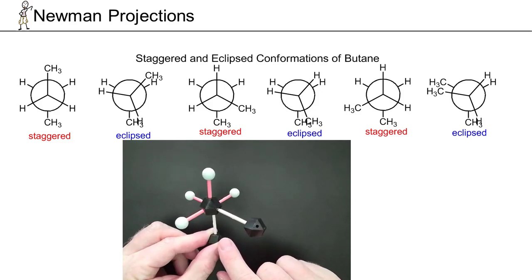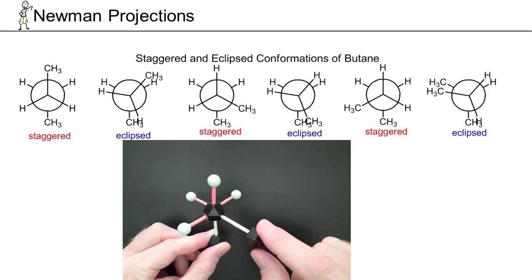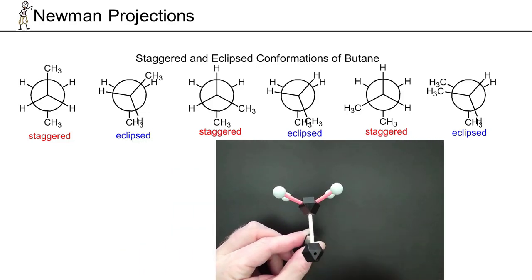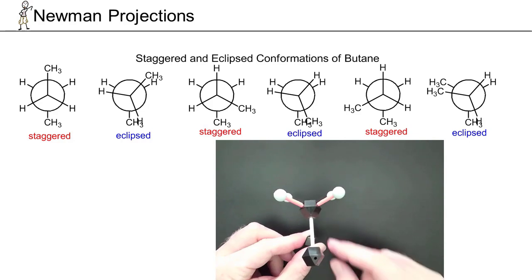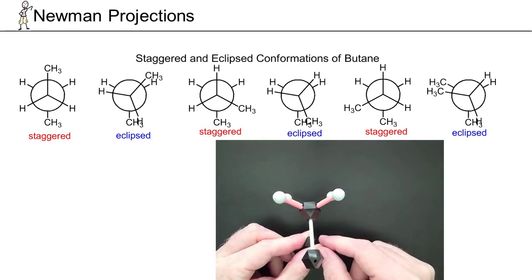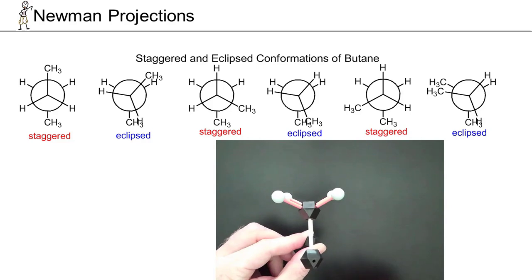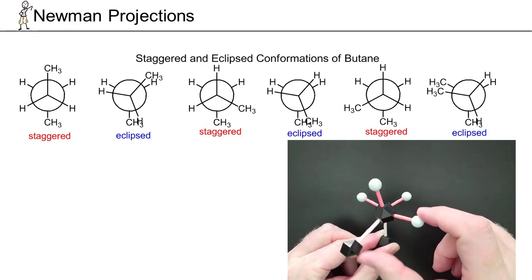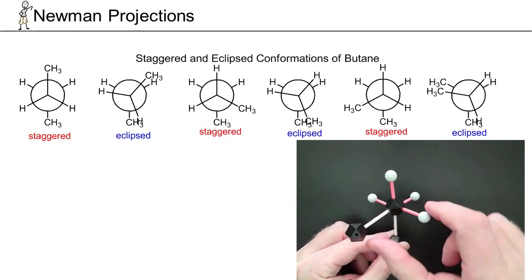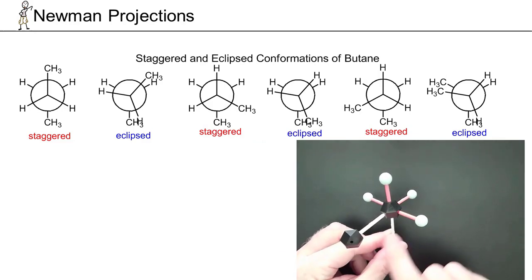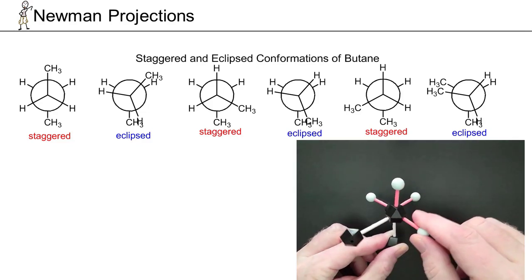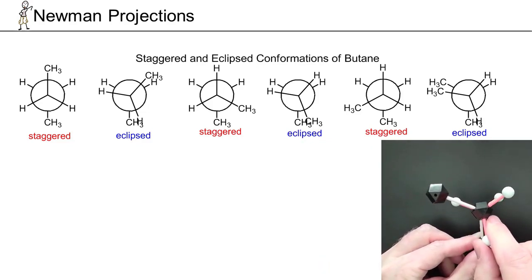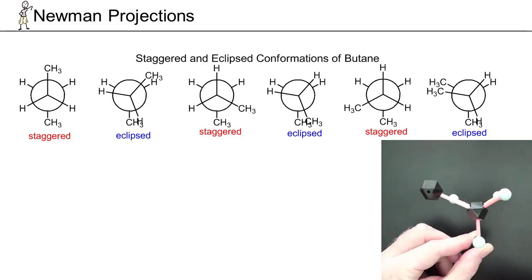Rotating another 60 degrees clockwise gives another eclipsed conformation. This one is higher energy than the previous eclipsed because the two large methyl groups are now eclipsing each other — the bigger the groups eclipsing, the higher the energy. Not all eclipsed conformations are equivalent, and not all staggered are equivalent. Rotating another 60 degrees gives another staggered conformation with another gauche interaction between the methyl groups. Then another 60 degrees gives another eclipsed conformation, equivalent in energy to the first eclipsed we showed.